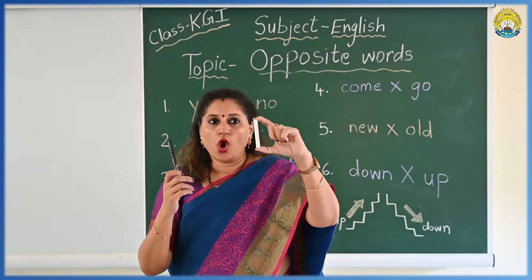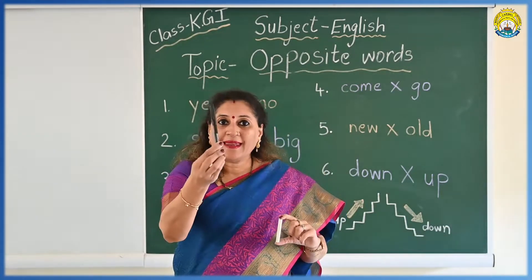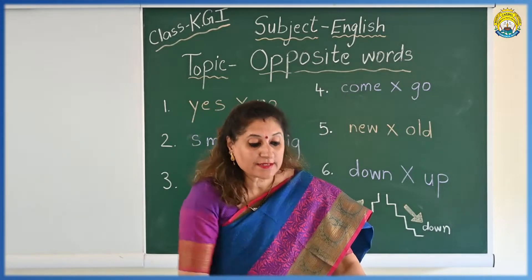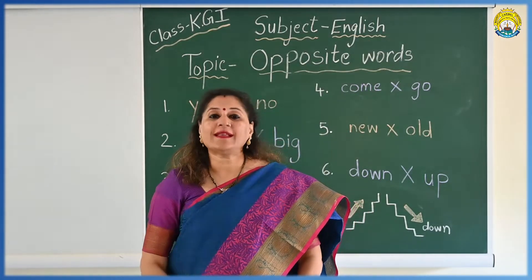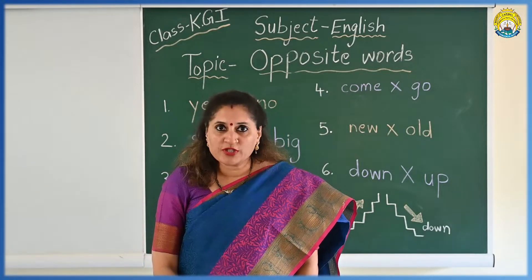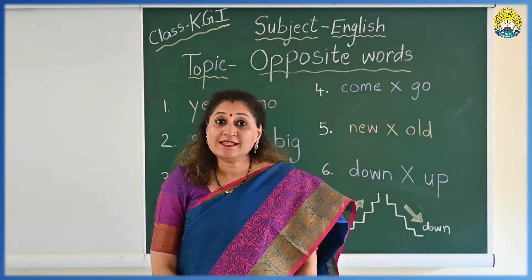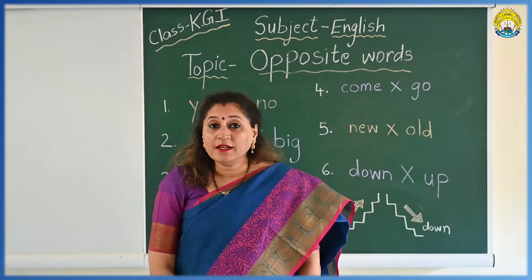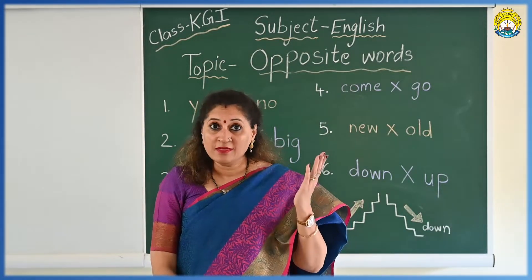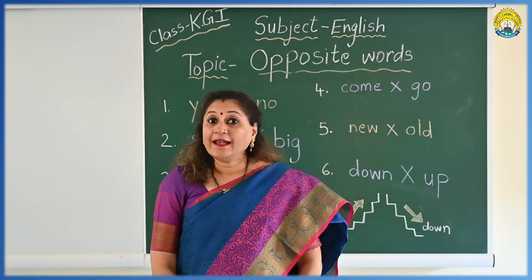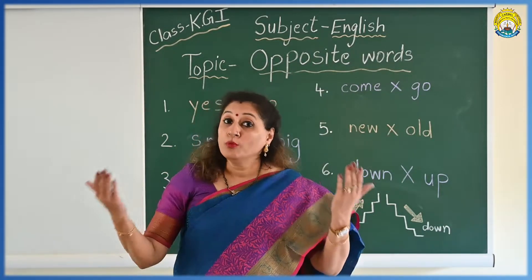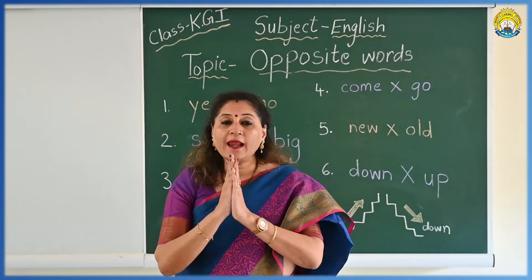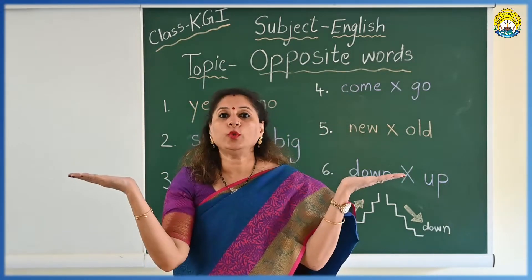So the chalk is white and the pen is black. Now I will give you one more example of opposite: day and night. In the day, what do you see? Sun. And at night you see stars, moon — these things you see. So these are opposite to each other.